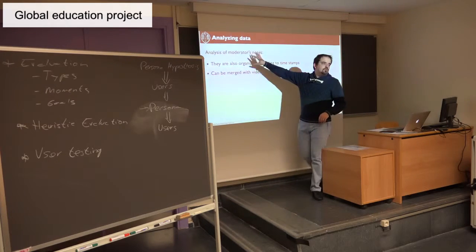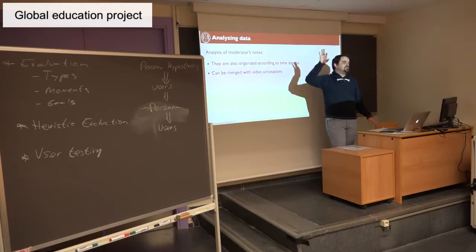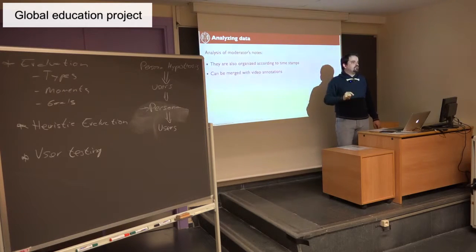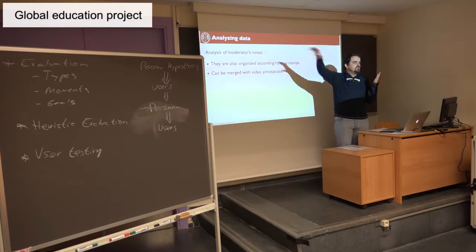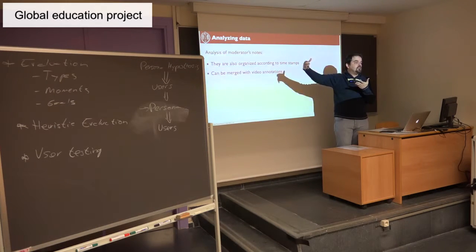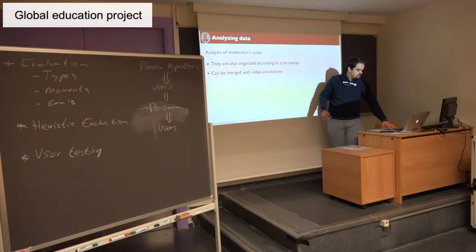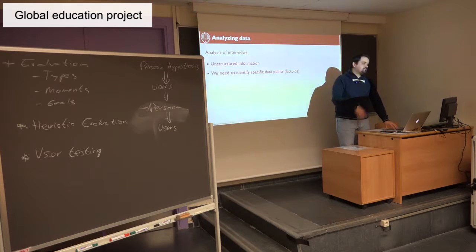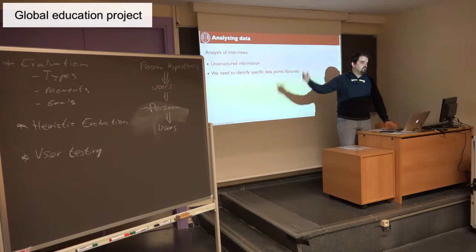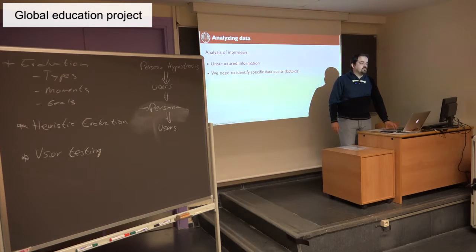You may also want to analyze all the handwritten notes by the moderators and the observers — it's very useful. If someone is there with a notepad taking notes, just have a clock somewhere so they can write the timestamp of their observation. That makes it easier to correlate them with the video annotations, and you can even merge them together. You will also want to analyze the interviews and questionnaires. When you have interviews and questionnaires, you create lists of factoids — you already know how to do this from the research phase in goal-directed design, so it's the same process.